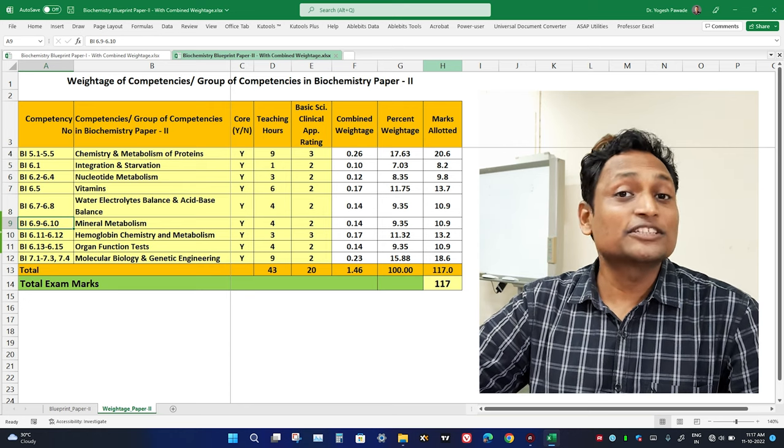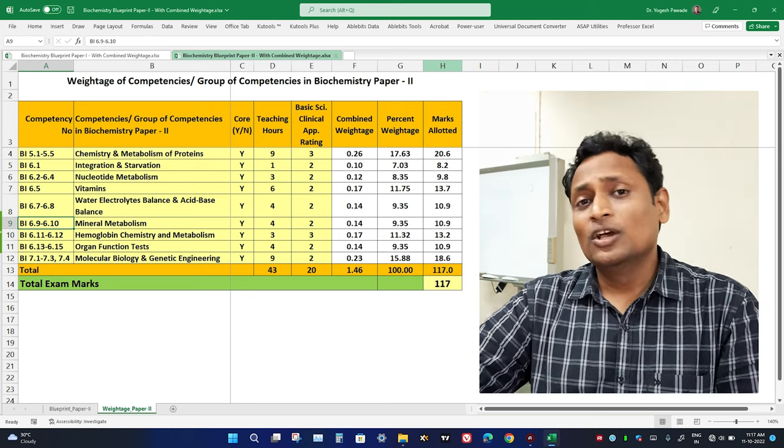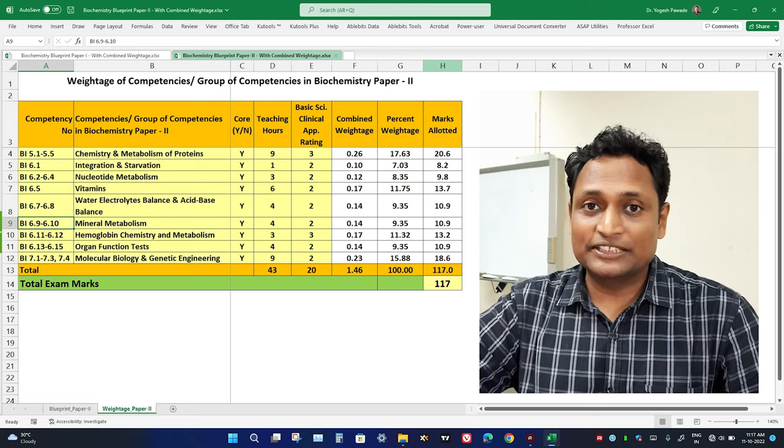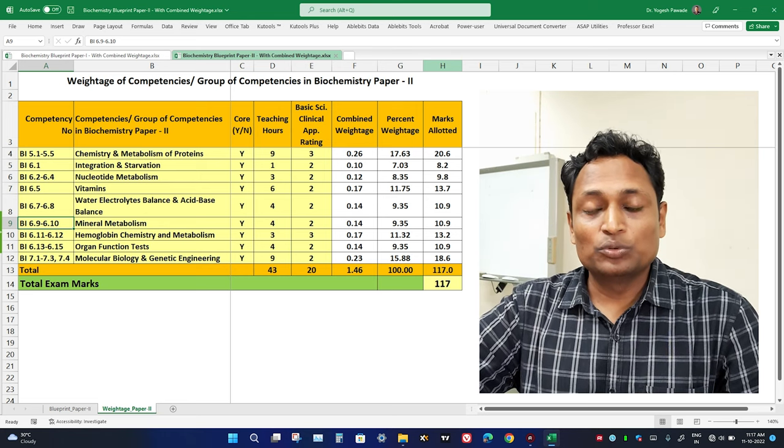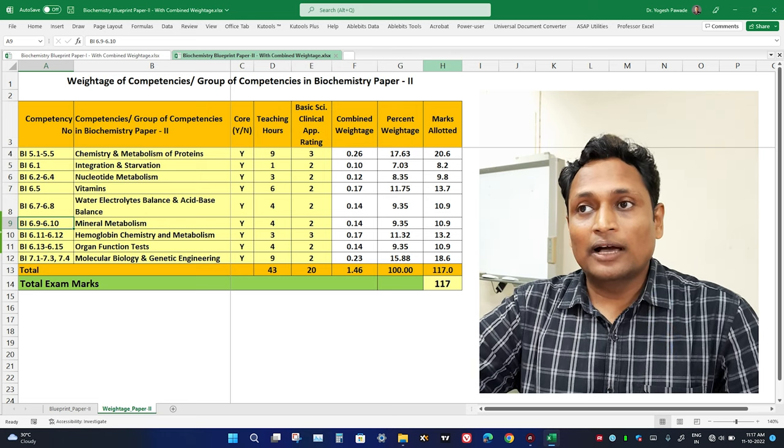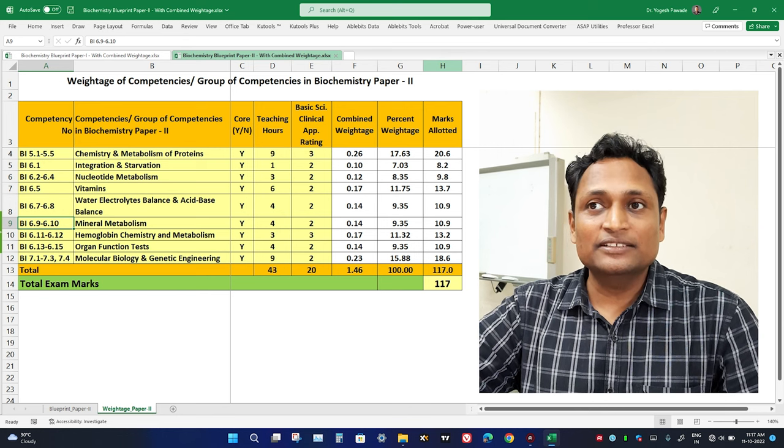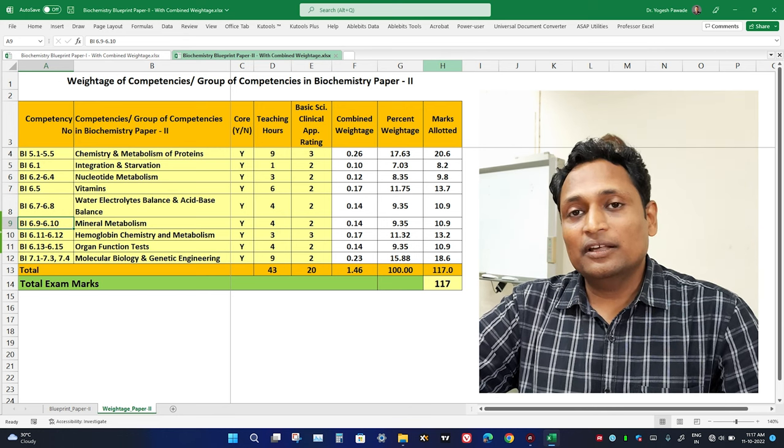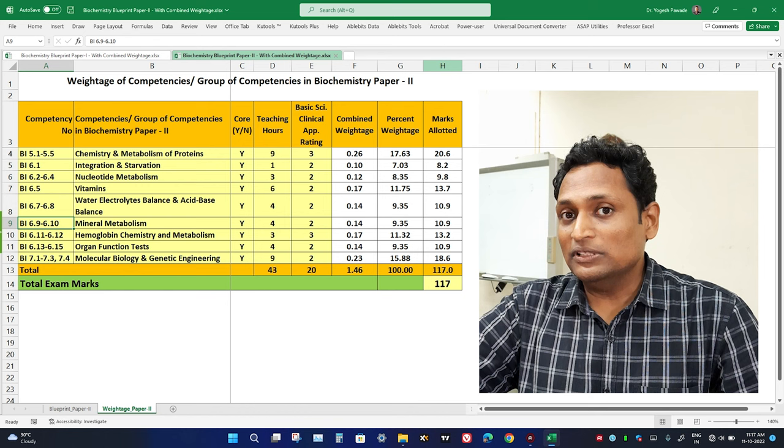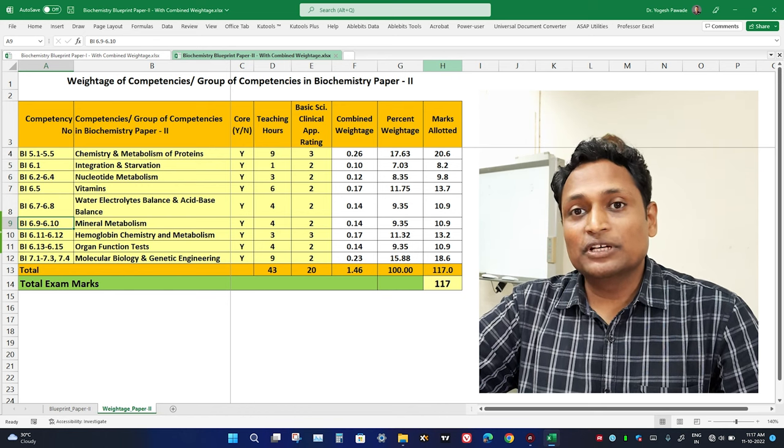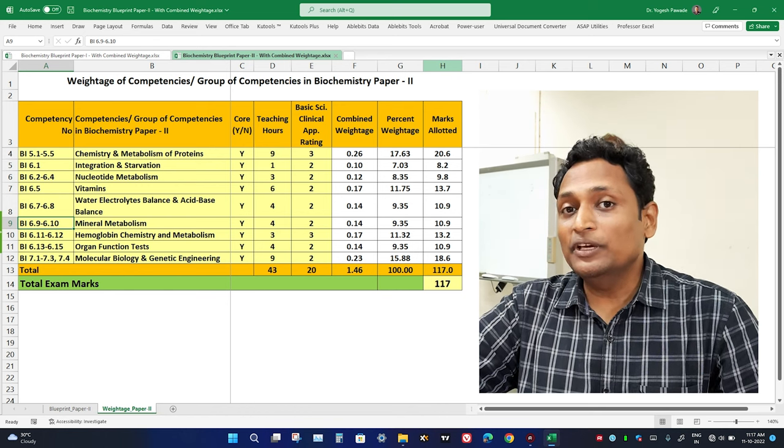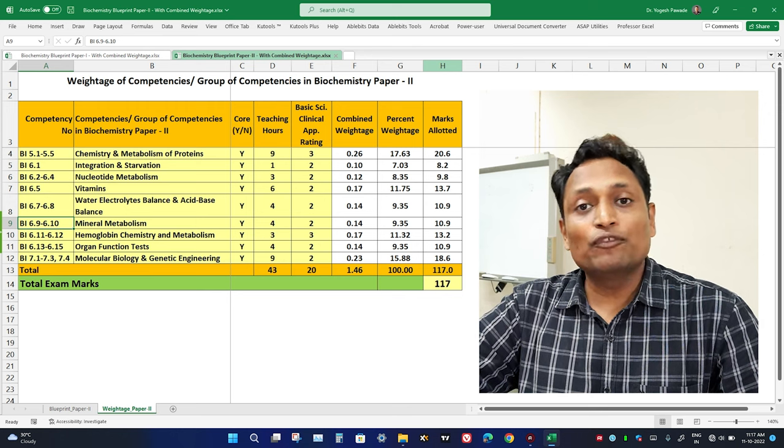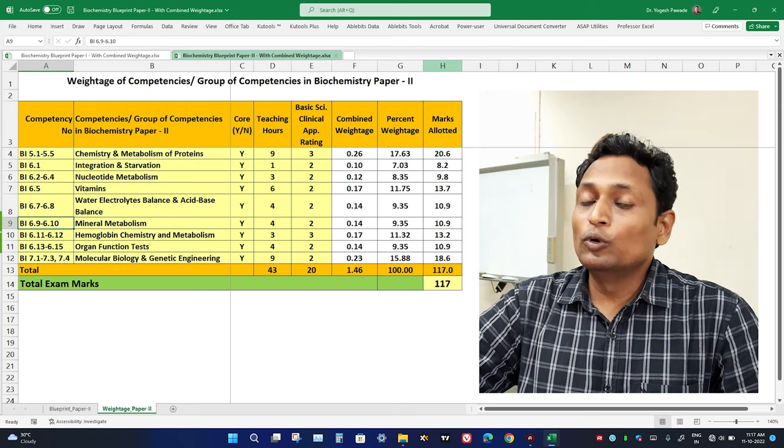Okay, now we will discuss about the Excel sheets. We have shared with you both the Excel sheets for paper 1 and paper 2. As we have discussed in the previous slides in this session, there are total 5 tables in the Excel sheets which are important. First table being the Weightage Calculation table and 4 tables are pertaining to Blueprint preparation.